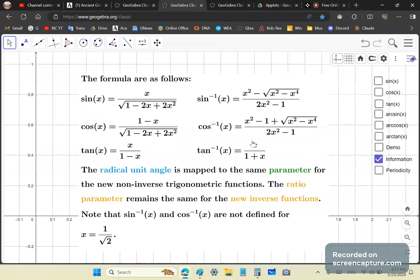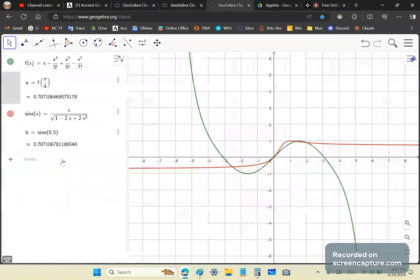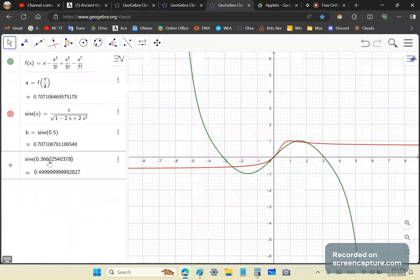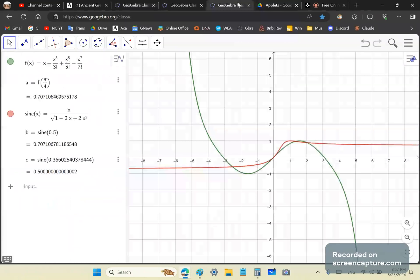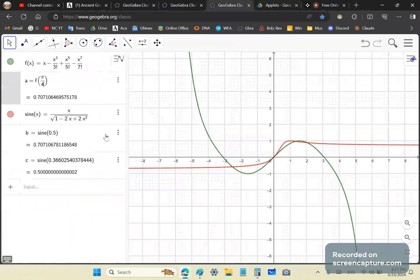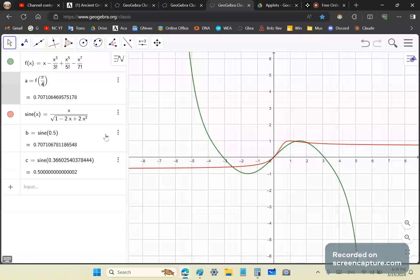Let's write the parameter down, which is 0.36602540378444. I can use it in any of my trigonometric formulas. Any of these formulas take the same parameter, even the inverses take the same parameter. If I go back to this test applet and say sine of 0.36602540378444, that gives me the result.